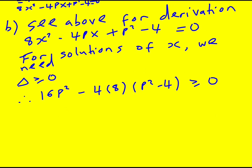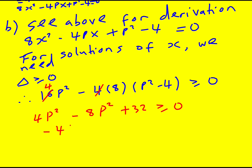There's a common factor of 4, so dividing through by 4 gives 4p squared minus 8p squared minus 32 plus 32, which simplifies. So minus 4p squared is greater than or equal to minus 32. Dividing through by minus 4 swaps the inequality sign: p squared is less than or equal to 8.